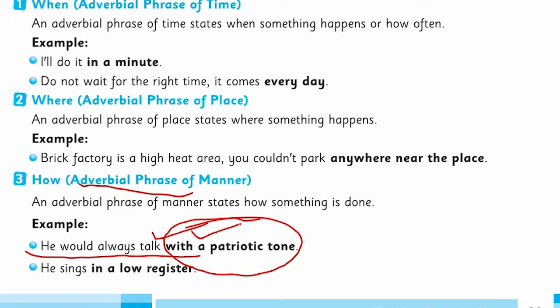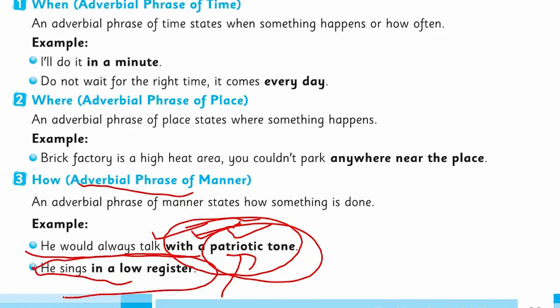'With' is a preposition, 'a' is your article, 'patriotic' is an adjective, and 'tone' is the noun — so 'with a patriotic tone' becomes your adverbial phrase of manner. Another example: 'He sings in a low register.' 'In a low register' is also an adverbial phrase of manner, telling you how he talks and how he sings.